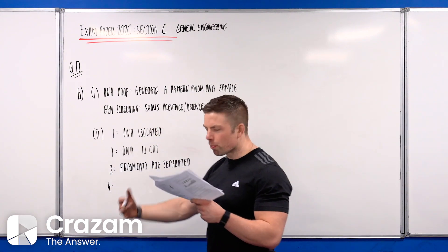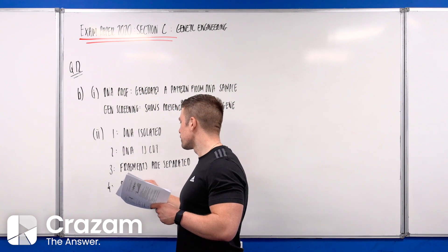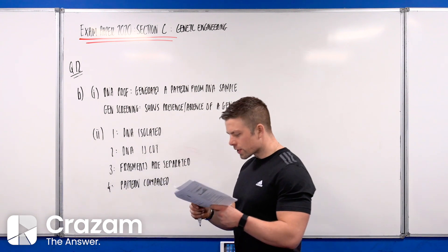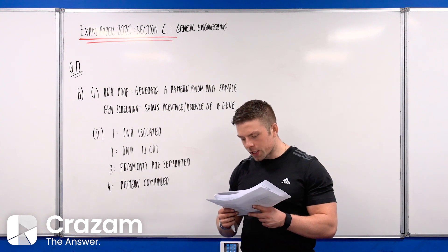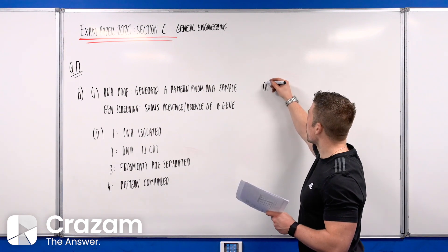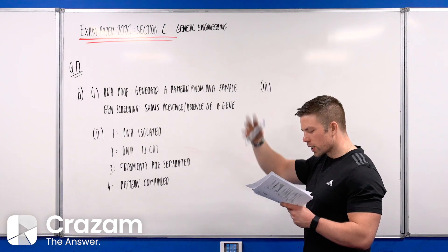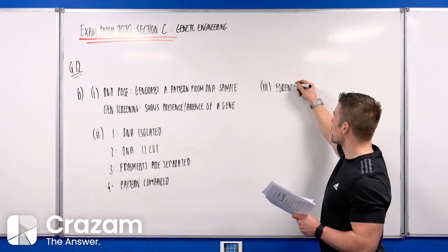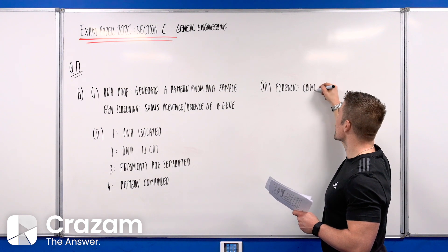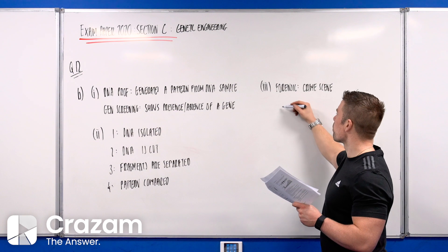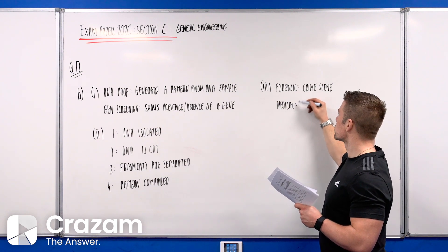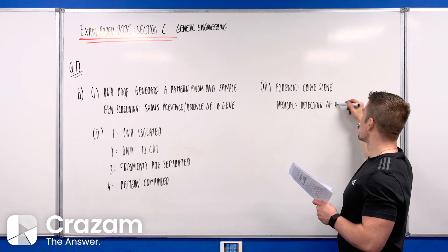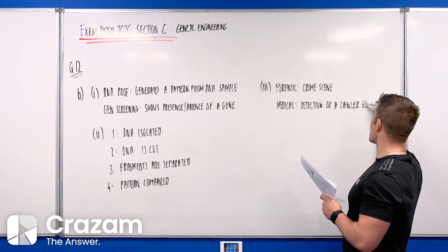Part 4 is the pattern is analyzed or compared. Part 3: give any two applications of DNA profiling. There's tons of examples - they have forensic examples in their marking scheme like crime scene, or a medical example like detection of a cancer gene.